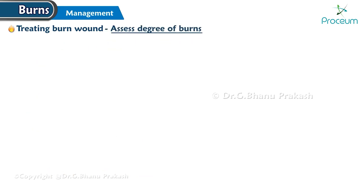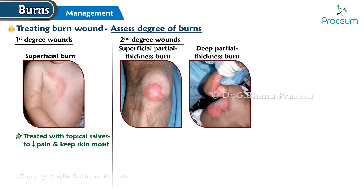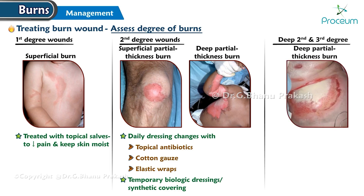Assess the degree of burns. First degree wounds: treatment with topical salves to decrease pain and keep the skin moist. In second degree wounds, temporary biological dressings or synthetic coverings are used, with daily dressing changes using topical antibiotics, cotton gauze, and elastic wraps. In deep second degree and third degree burns, excision and skin grafting are recommended.